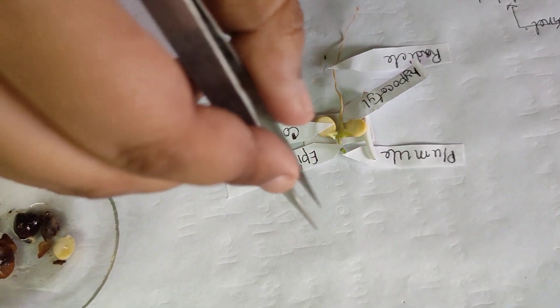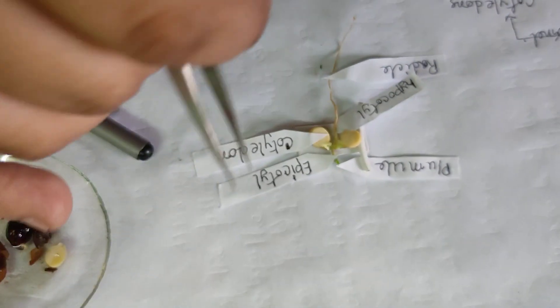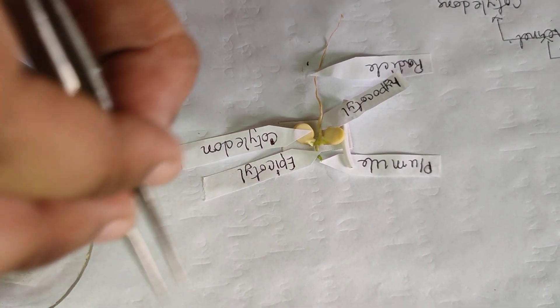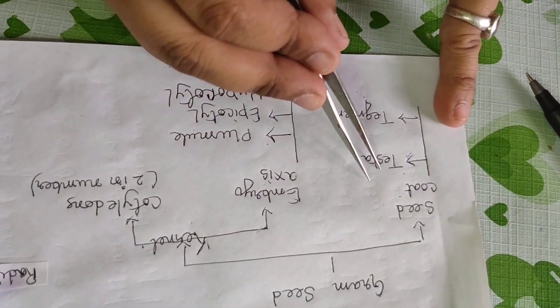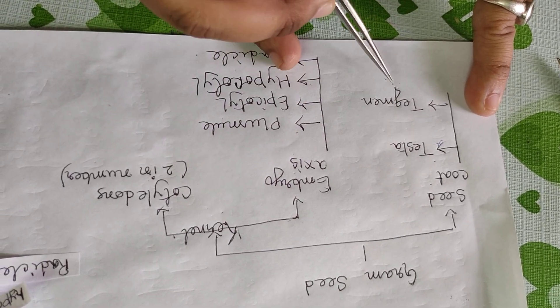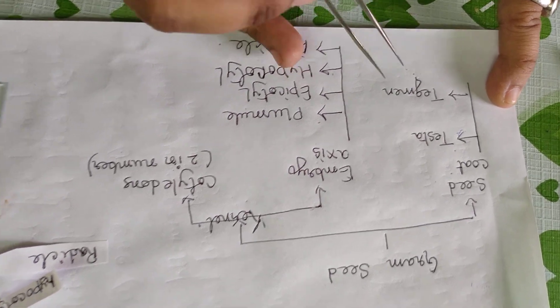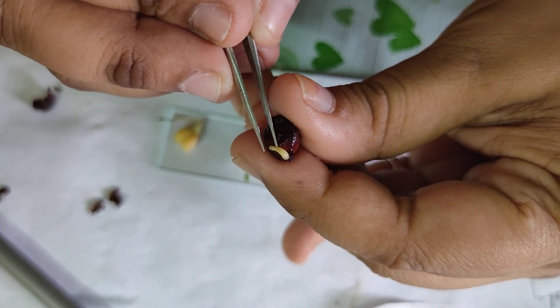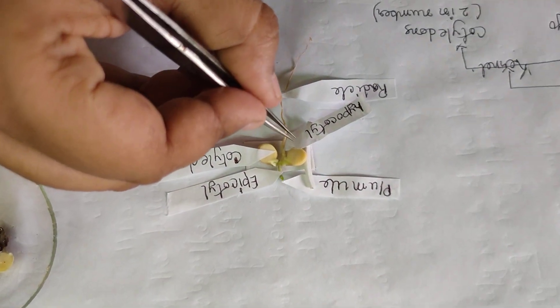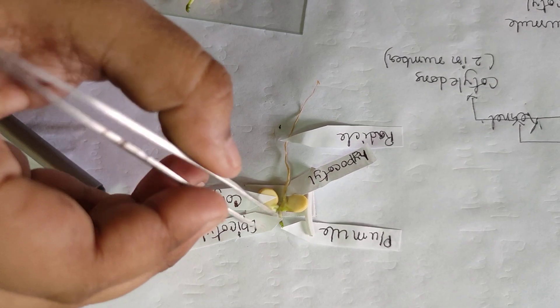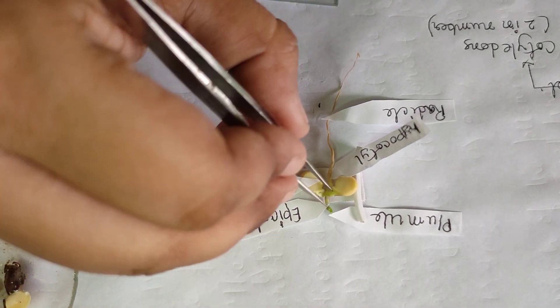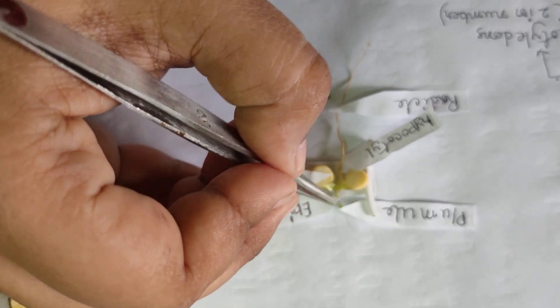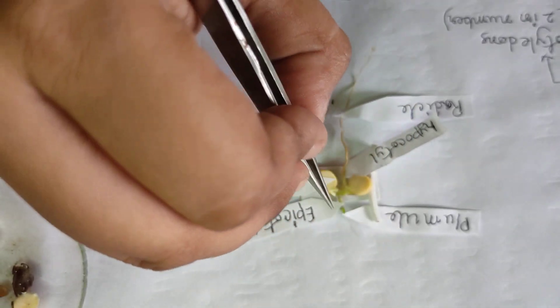This is all about the embryo axis of the gram seed. In conclusion, the gram seed is divided into two parts: seed coat and kernel. The seed coat is again divided into two parts — testa and tegmen. The embryo axis is divided into radicle, hypocotyl, epicotyl, and plumule. The radicle first comes out from the seed, and from the plumule, the shoot develops.